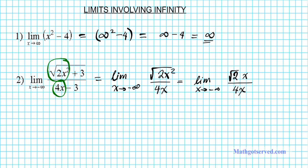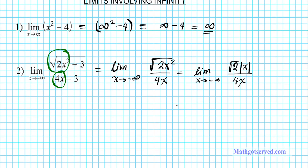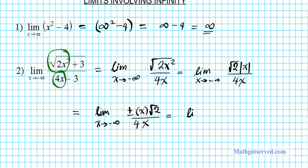One thing we also have to note is if we take the square root of a square, we're going to have an absolute value quantity here. Since we're approaching from the left, this absolute value can take on two signs — it could either be positive or negative. So this becomes the limit as x approaches negative infinity of plus or minus x root 2 divided by 4x. Since we're going to the negative direction, we're going to take the negative sign.